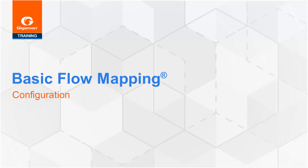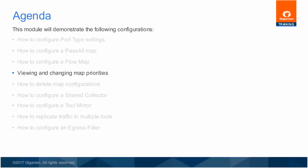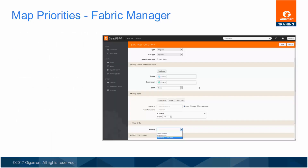Welcome to the Basic Flow Mapping module. The next example for basic mapping relates to managing rule priorities. This example relates to ensuring that map priorities work to your advantage by delivering traffic to each tool where it is required.